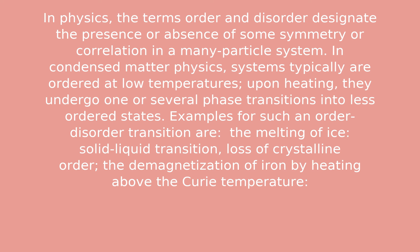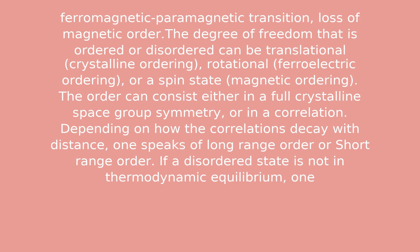Systems typically are ordered at low temperatures. Upon heating, they undergo one or several phase transitions into less ordered states. Examples of such order-disorder transitions are the melting of ice, a solid-liquid transition involving loss of crystalline order, and the demagnetization of iron by heating above the Curie temperature, a ferromagnetic-paramagnetic transition involving loss of magnetic order.